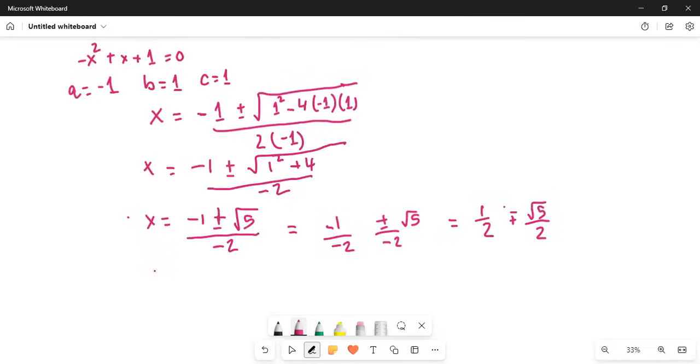So the solutions are one half minus square root of 5 over 2 and one half plus square root of 5 over 2. These are the two solutions.